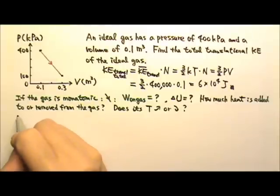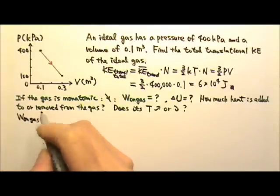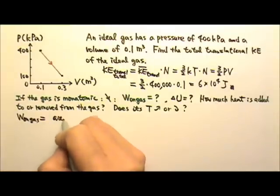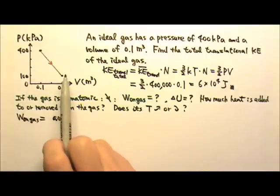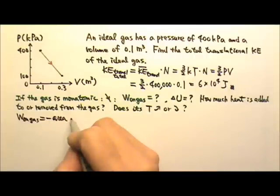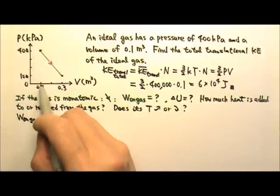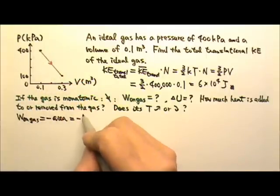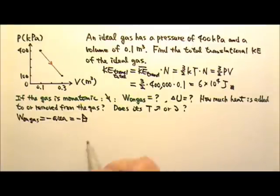The work done on the gas would be the area of the graph. Because the volume increases, the work done on the gas is negative. So this is the negative area under the graph, which is a shape that includes a triangle on the top and a rectangle on the bottom.